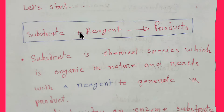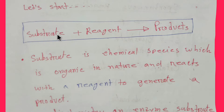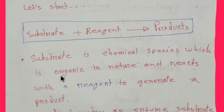In a chemical reaction, substrate is attracted by a reagent and a product is produced. So in a chemical reaction we have substrate, we have reagent, and we have product. In the substrate, a bond is broken, and in the product, a new bond is formed.